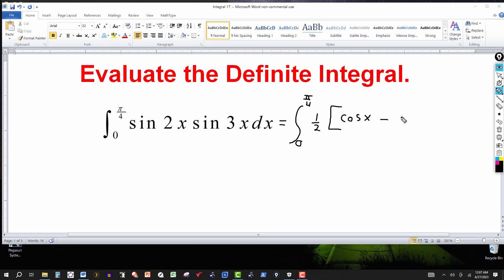And it's going to be minus the cosine of the sum of the two angles. This will be 5x. And we'll come over here then, we're ready to integrate.